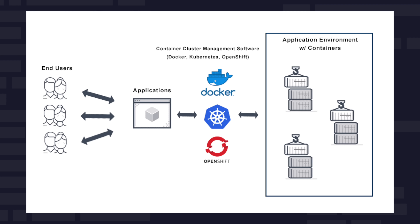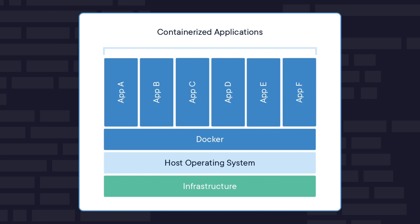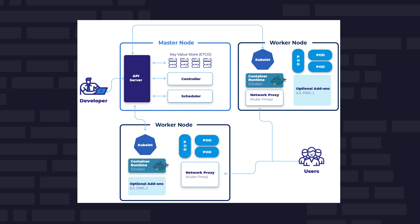Containerization technologies like Docker and Kubernetes are essential for creating, deploying, and managing applications in an isolated, consistent, and scalable environment. Docker packages applications into containers, while Kubernetes orchestrates these containers, managing their lifecycle across multiple environments.